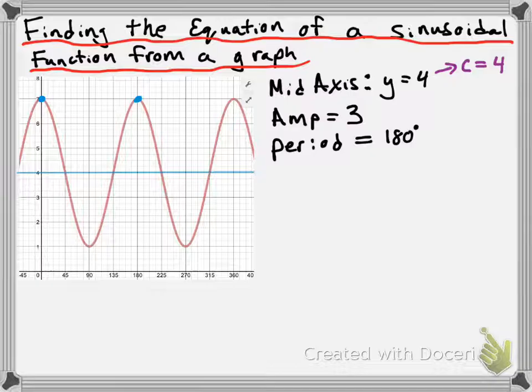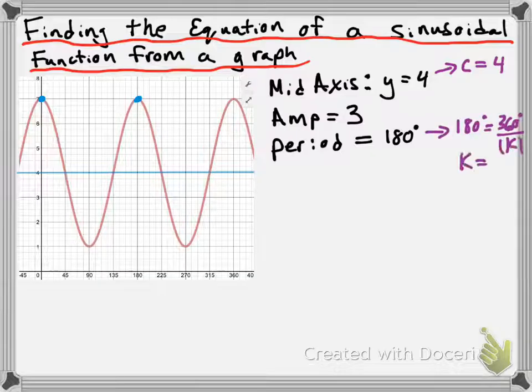So the period is 180 degrees. And why is that useful to us? Well, you might recall that there's a connection between the period and the k value. Specifically, the period is equal to 360 degrees divided by k. So since our period is 180 degrees, we'll have 180 degrees equal to 360 divided by k. And the only k value that will work to give us 180 is 2. So k is 2.